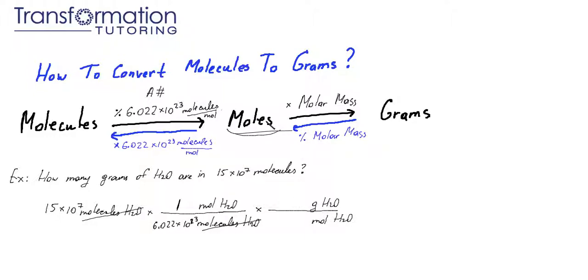Again, when we look at my chart, we see that to go from moles to grams, I need to multiply by the molar mass, which is taken from the periodic table. The molar mass for water is around 18 grams per mole.